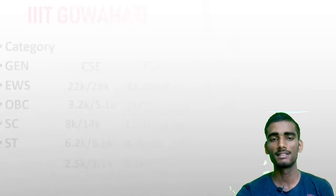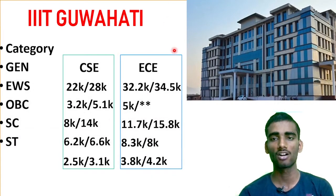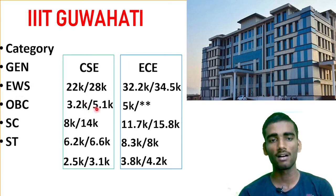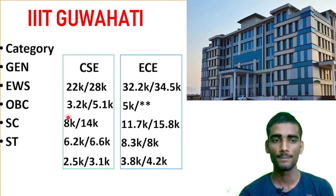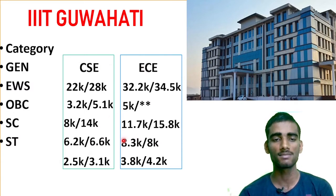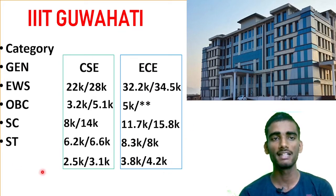Moving to IIIT Guwahati — a great college with good facilities and a beautiful green campus. General category CSC cutoff is 22k–28k, EC 32.2k–34.4k. For EWS: CSC 3.2k–5.1k, EC 5.5k. OBC: CSC 8k, EC 11.7k. SC: CSC 6.2k–6.6k, EC 8k–8.3k. ST candidates: CSC within 3.1k, EC 3.8k–4.2k. Cutoffs may vary year by year.